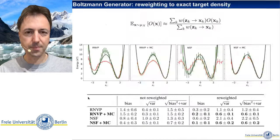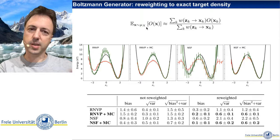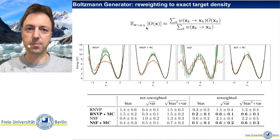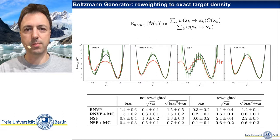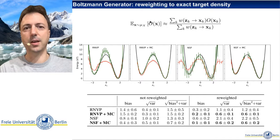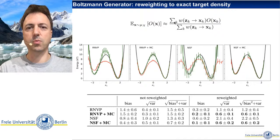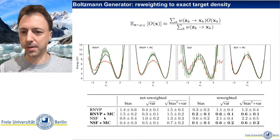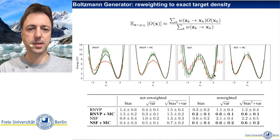We also show that stochastic normalizing flows can be used to re-weight to the exact target density for unbiased sampling. Because we can compute the importance weight for every path sample, we can insert it into re-weighting equations or use it in a Markov chain Monte Carlo framework. Even though we cannot compute the marginal probability density p of x, we can still compute importance weights for path samples that will unbias our samples in x. This works much better for stochastic normalizing flows than for deterministic flows — both the bias and variance of the target samples improve.